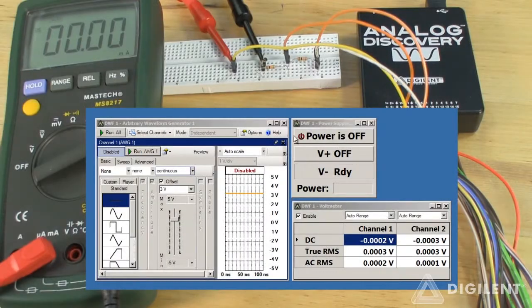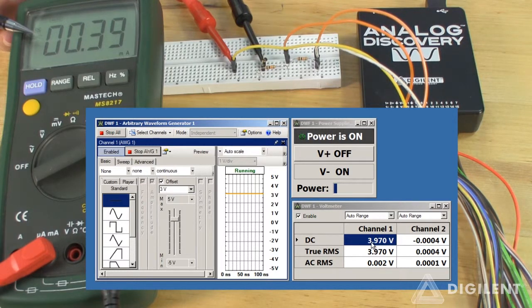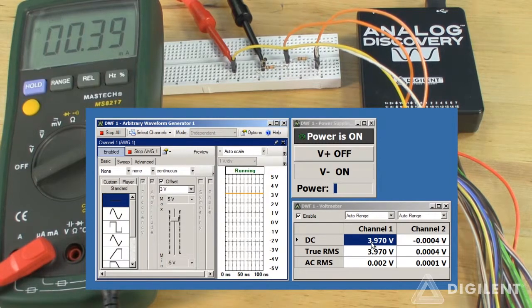The voltage instrument, waveform generator, and voltmeter are already open. I'll turn on V minus to apply the 5 volt source. In the waveform generator, I've set the voltage to 3 volts. I'll click on run AWG1 to apply that voltage. My measured voltage is about 4 volts, and my measured current is about 0.4 milliamps. This is close to what I calculated that these values should be, so it looks like I implemented the circuit correctly.